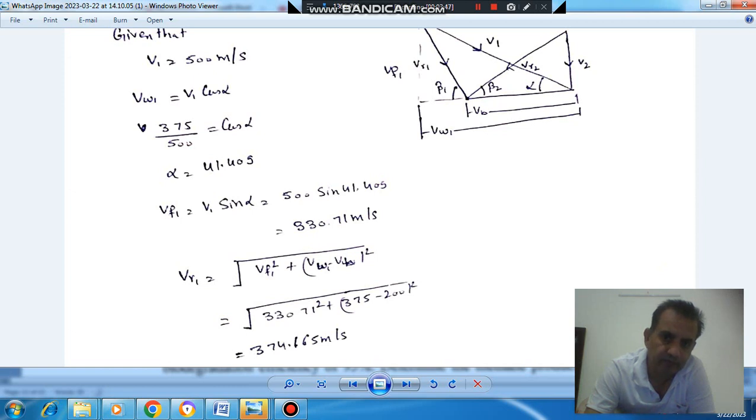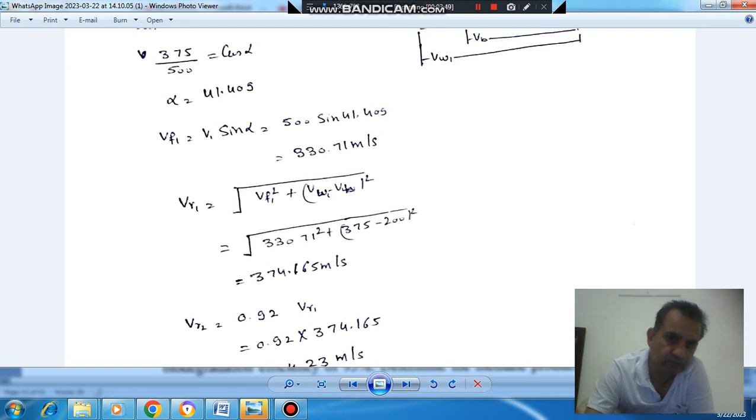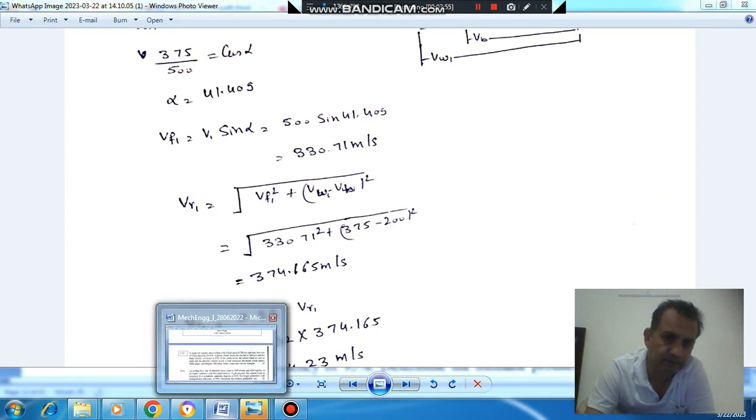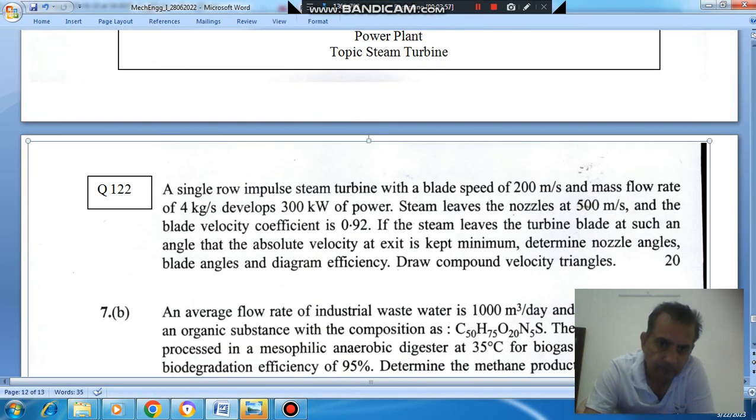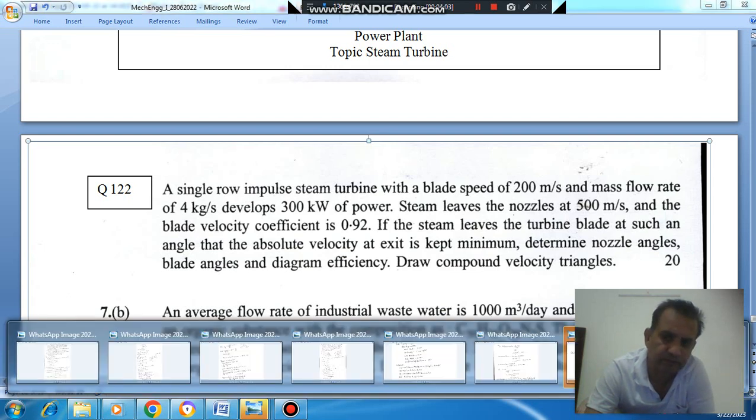VW1 is horizontal component and VF1 is vertical component. So VR1 comes out as 74.65 m per second. And blade friction factor, blade velocity coefficient is given, that is 0.92, or friction factor.